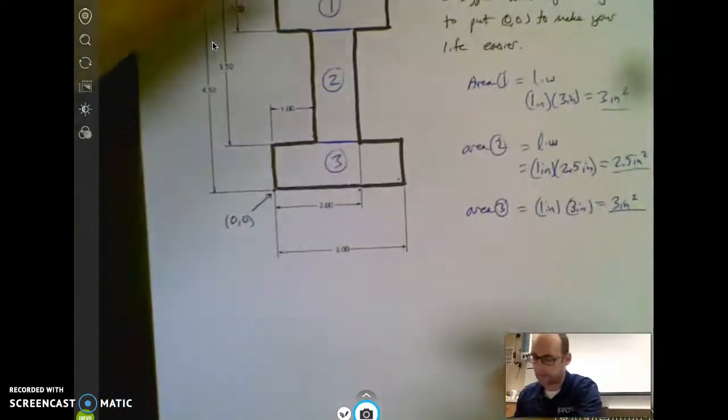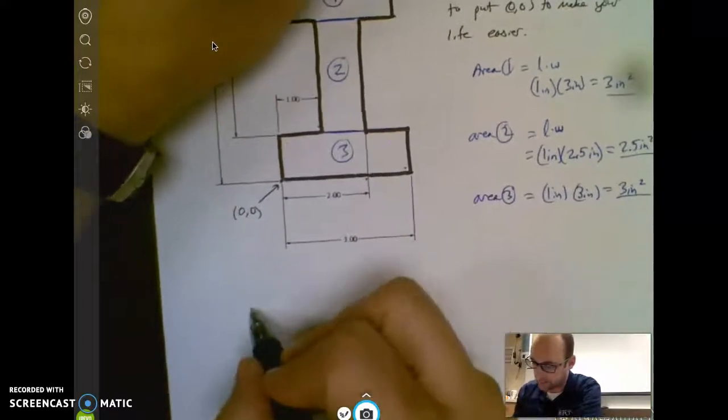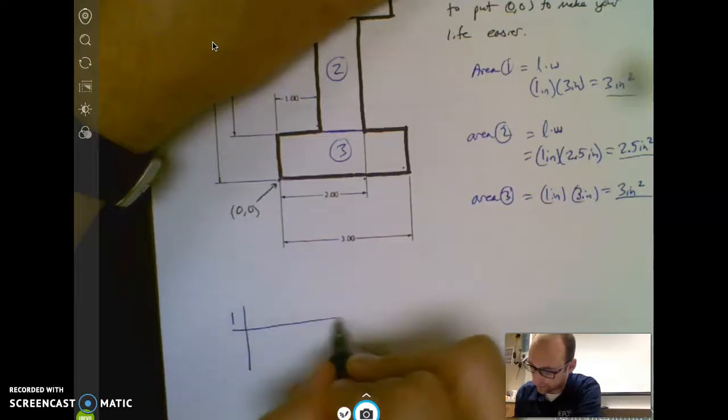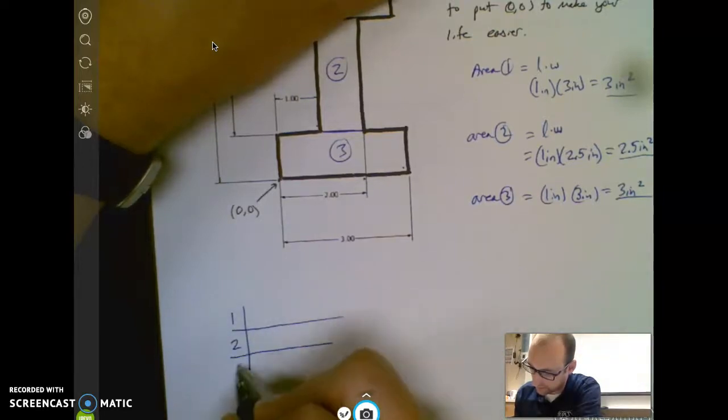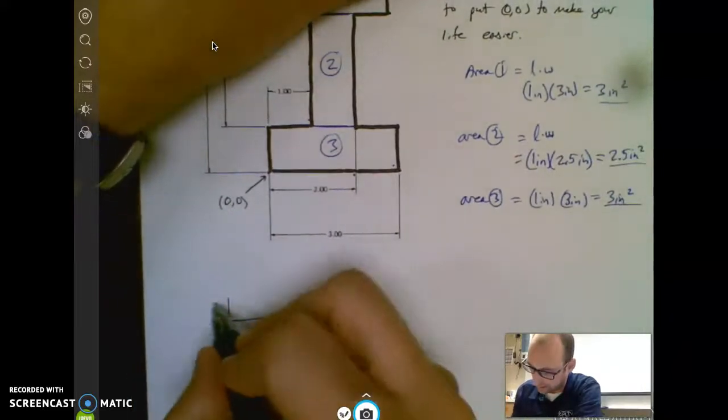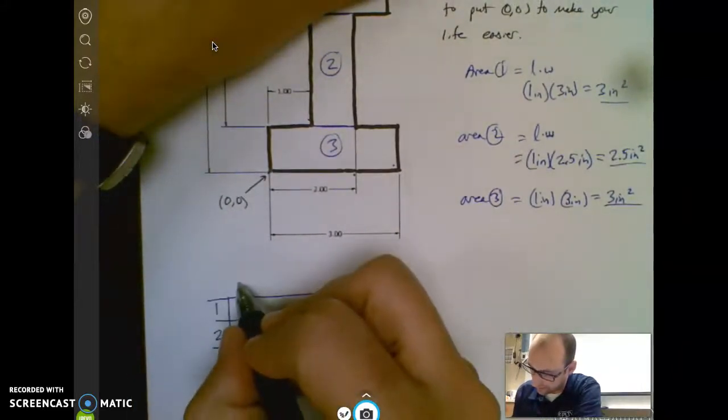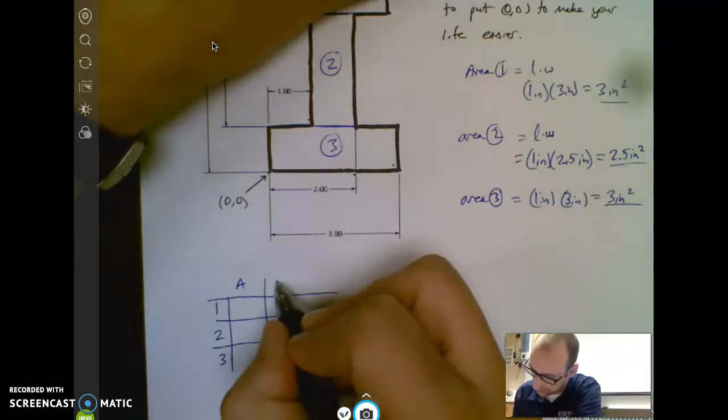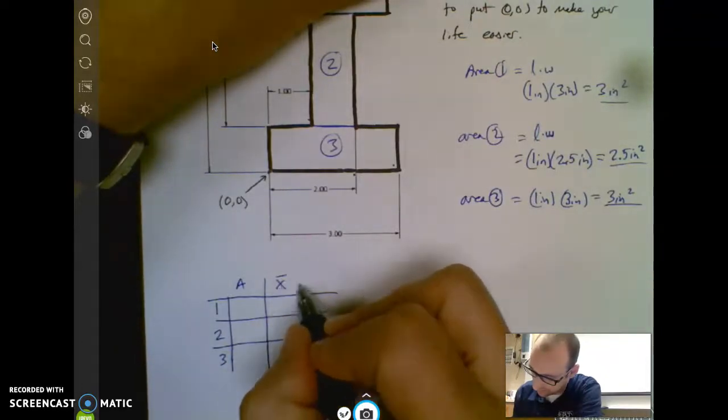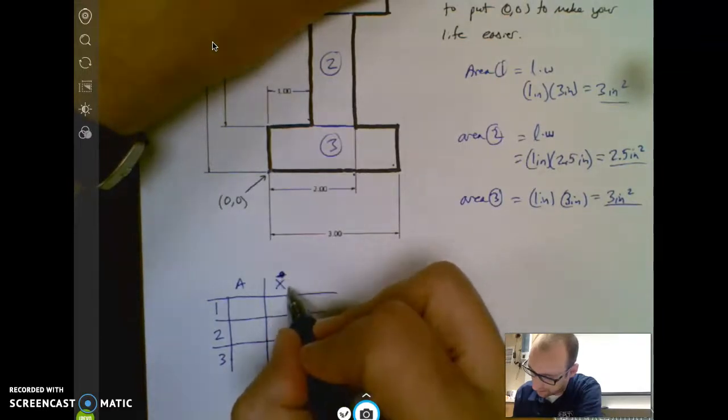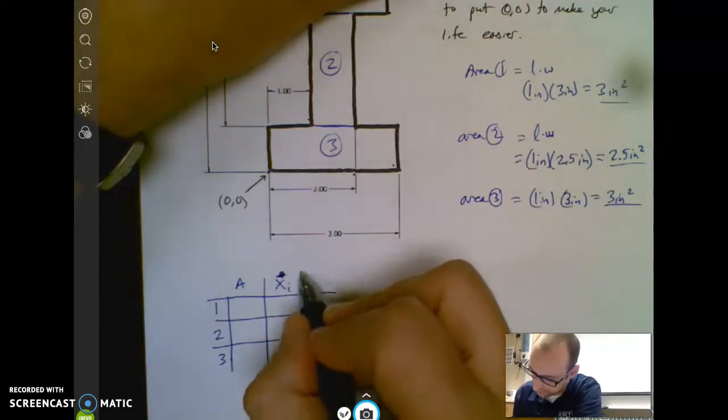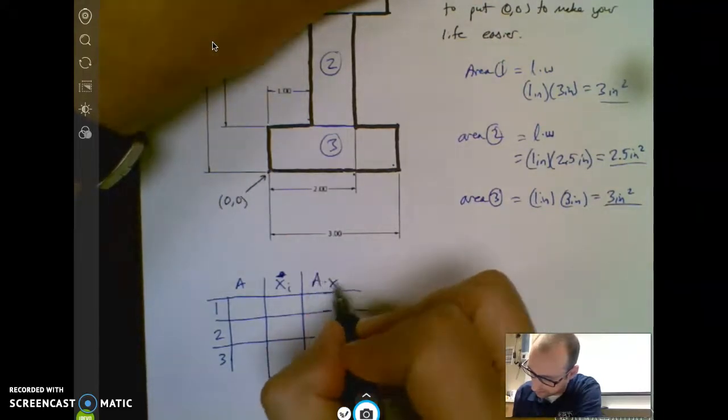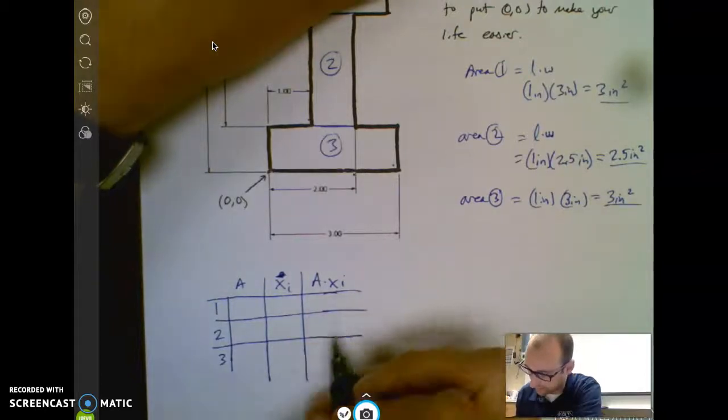Now we're going to do some columns here. We're going to have shape 1, shape 2, shape 3. Make sure you organize your work. And we're going to have a column for the area. And then we're going to have a column for the X bar, or sorry, the X centroid part on each shape. And then we'll make a column of their products, which is A times XI.